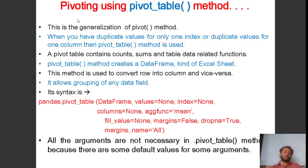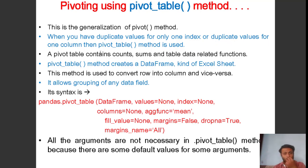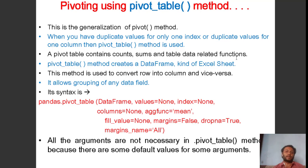Let's see the use of pivot_table. Pivoting using the pivot_table method — when you have a duplicate value for one index or one column, then the pivot_table method is used. When you have duplicate records in your data frame, a pivot table can contain count, sum, mean, and mode — these aggregate functions all come under the pivot_table method.